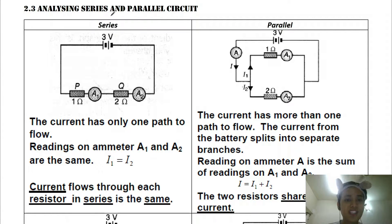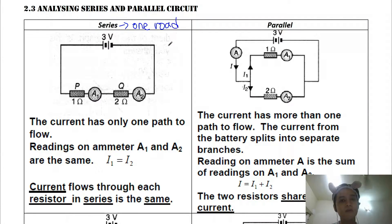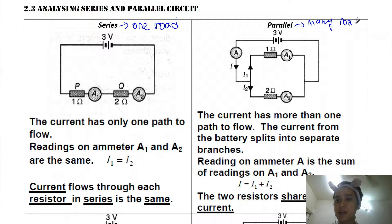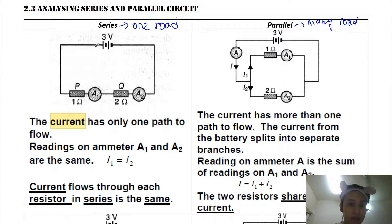For a series circuit, you only have one path — one road. For a parallel circuit, you have many roads, many paths, many junctions. So technically, for current — remember, current refers to the number of electrons moving in the circuit — in a series circuit, electrons can only move along one path.